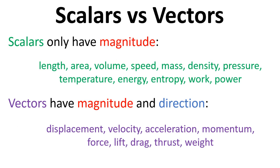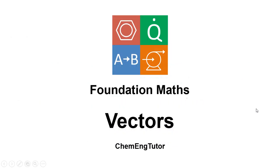And then a final word on vectors. Vectors have both magnitude and direction. So in maths we talk about scalars and these are just numbers with a magnitude. So things like length, area, volume, speed, mass, density, pressure, temperature, energy, entropy, work, power. Vectors have both magnitude and direction. So displacement, velocity, acceleration, momentum, force, lift, drag, thrust, weight. So these are two key terms, terminology that you need to know about. And this is the main difference. Scalars only have magnitude, but vectors have magnitude and direction. So that's been a short video introducing vectors. Thanks for watching.